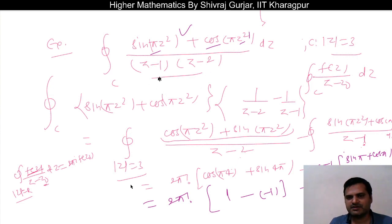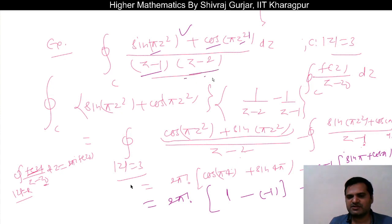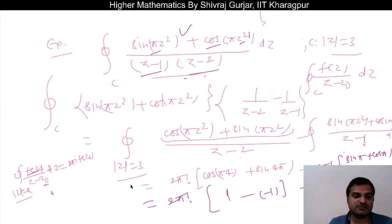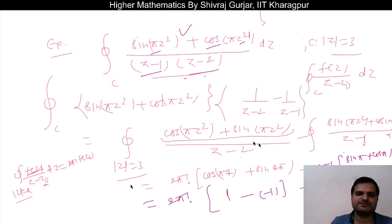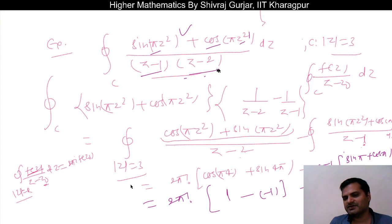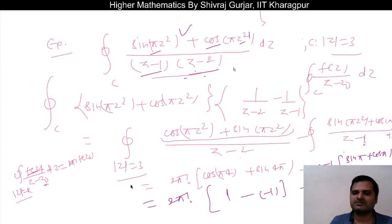cos(4π) = 1, sin(4π) = 0, sin(π) = 0, cos(π) = −1. So the result is 2πi·[1 + 0] − 2πi·[0 + (−1)] = 2πi + 2πi = 4πi. That is our answer. We use partial fractions to bring the integrand into Cauchy's Integral Formula form. Later we will study singularities and residues, which can be used directly.